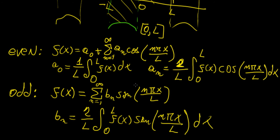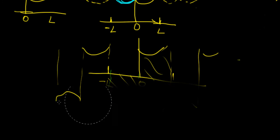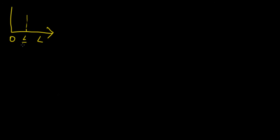Now that we have these definitions, we can apply them to a problem. Let's consider a simple piecewise function defined on the range [0, L], with a triangle shape peaking at L/2, with height k.